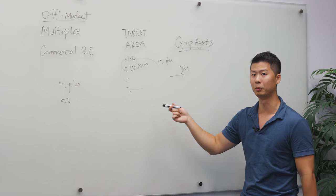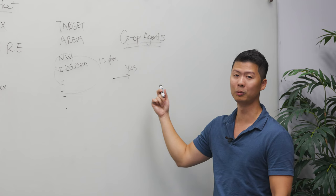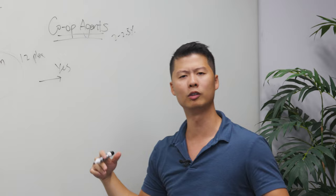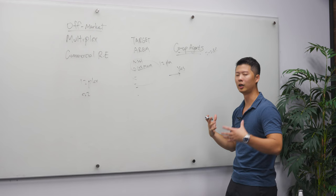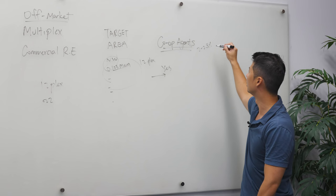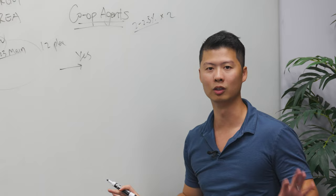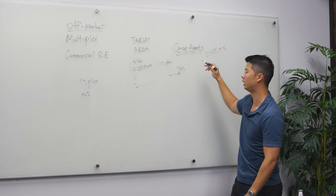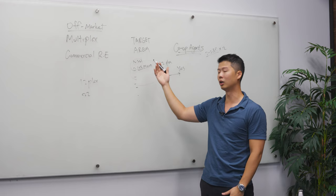And why would the co-op agent want to do this? Simply because if he or she can make two to 2.5% without having to do any work, and you're the one who's approaching them, which means you're the one lead for the buyer, they would love to either make this money or double end this deal by doing literally nothing. No MLS, no negotiation with other agents. He or she is just literally presenting an offer and hopefully they can close the deal.